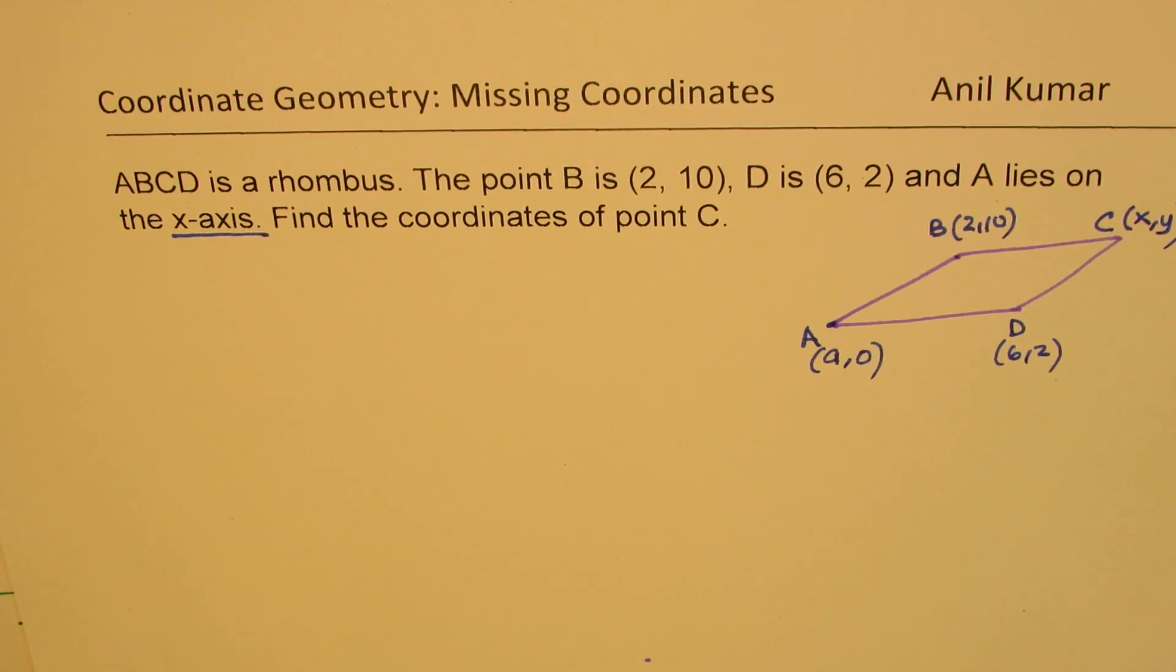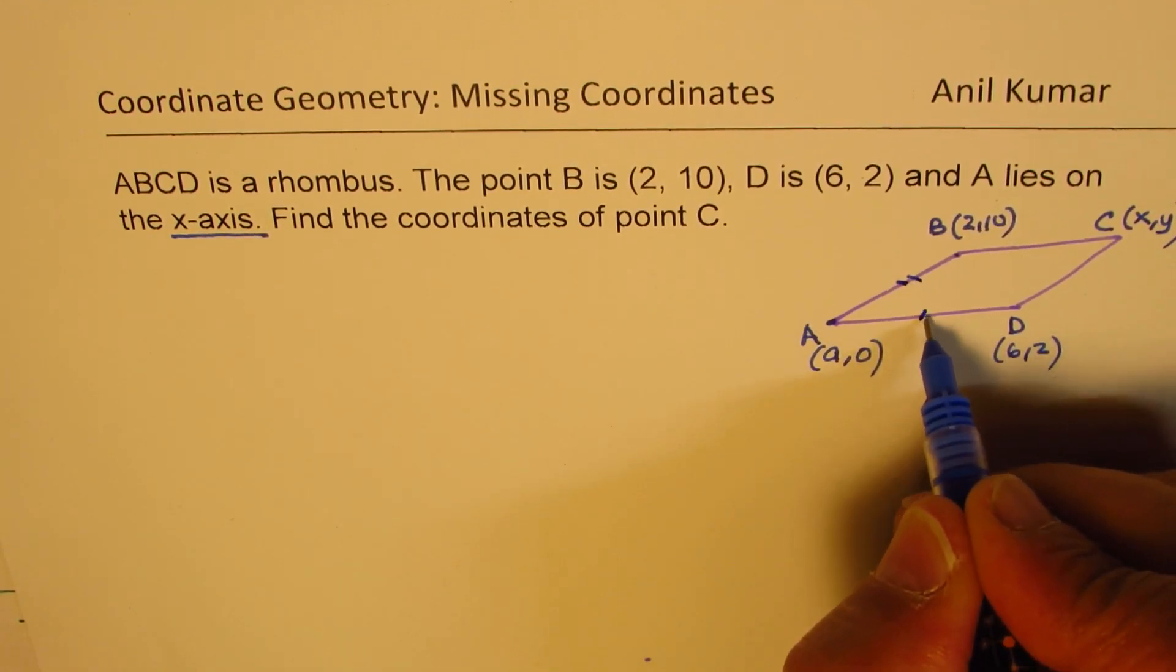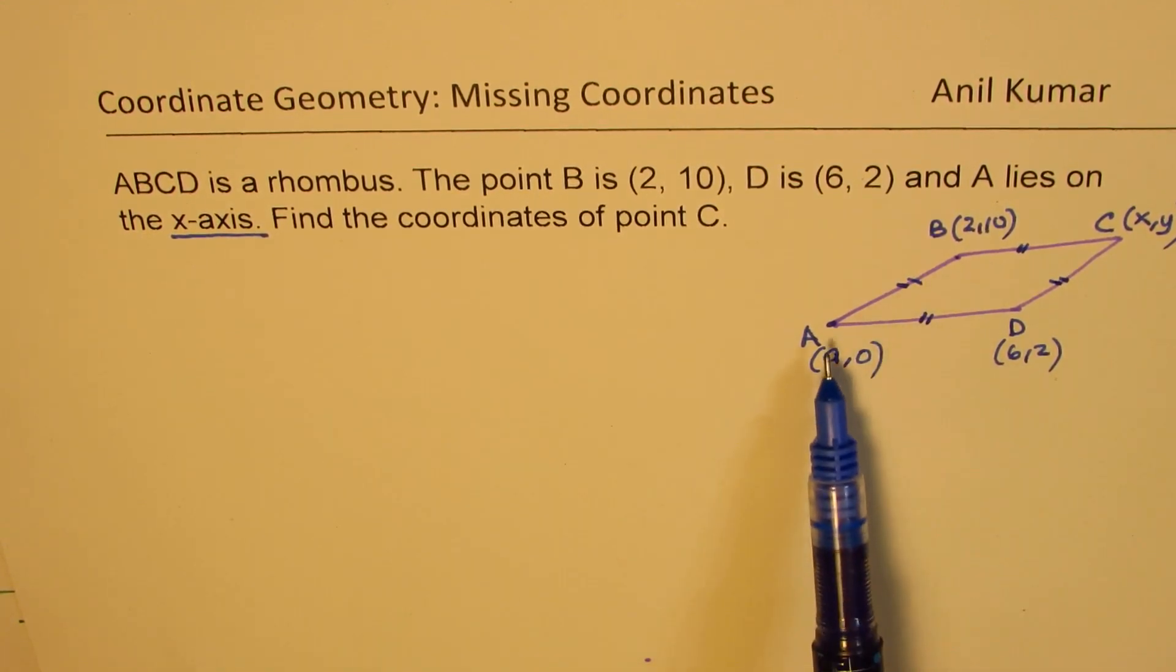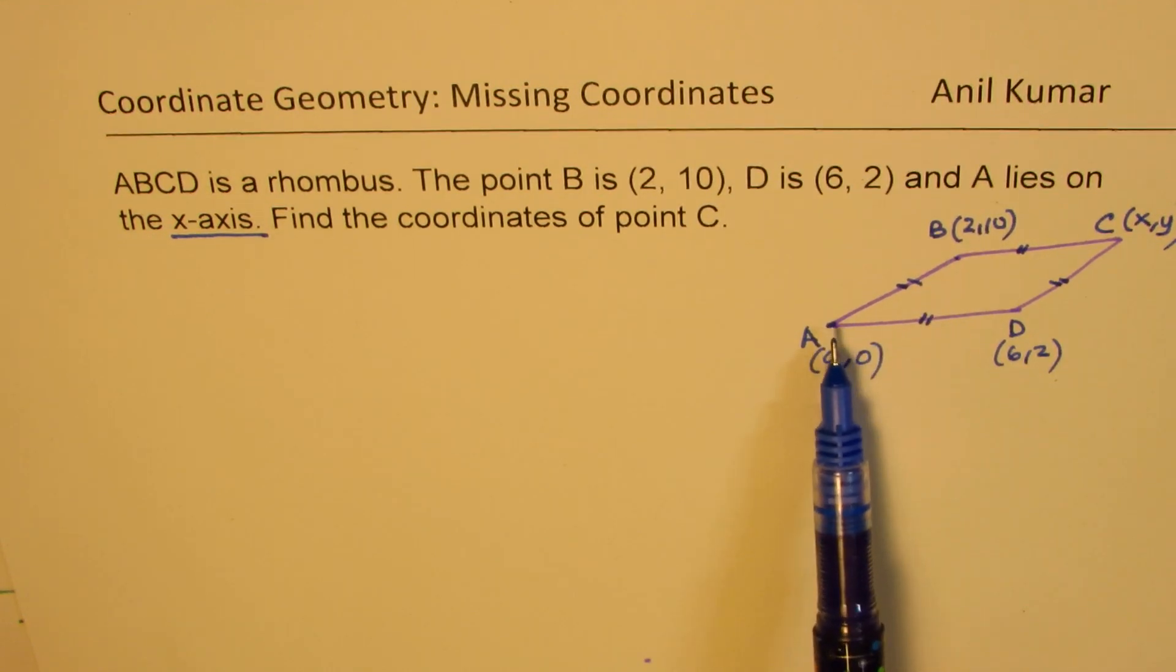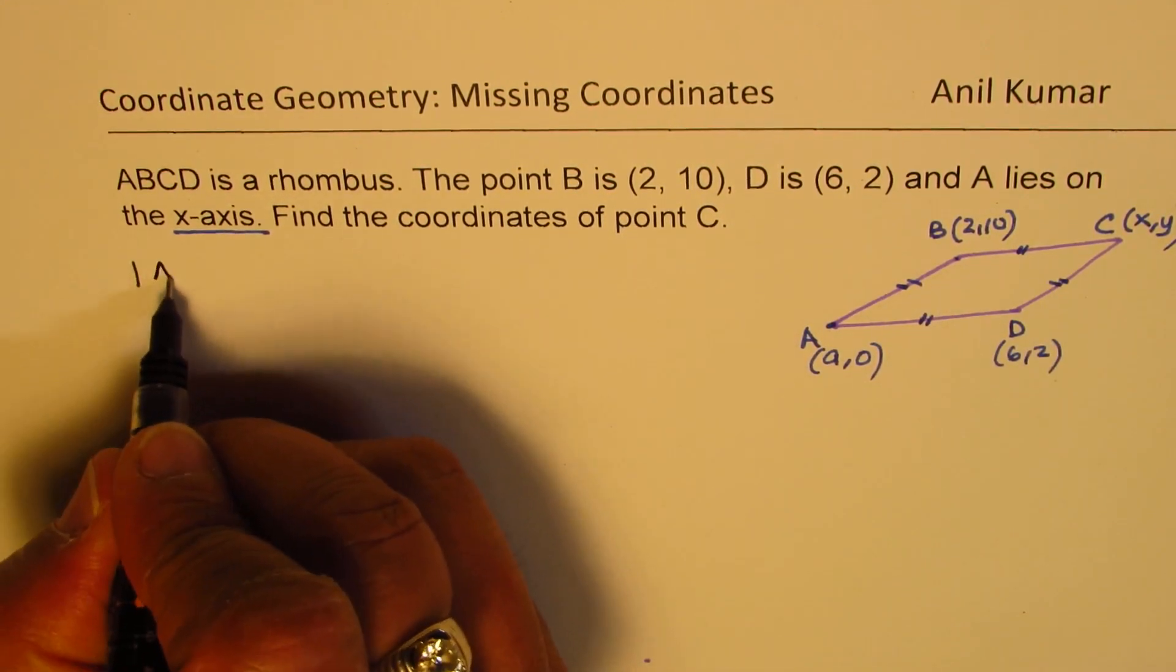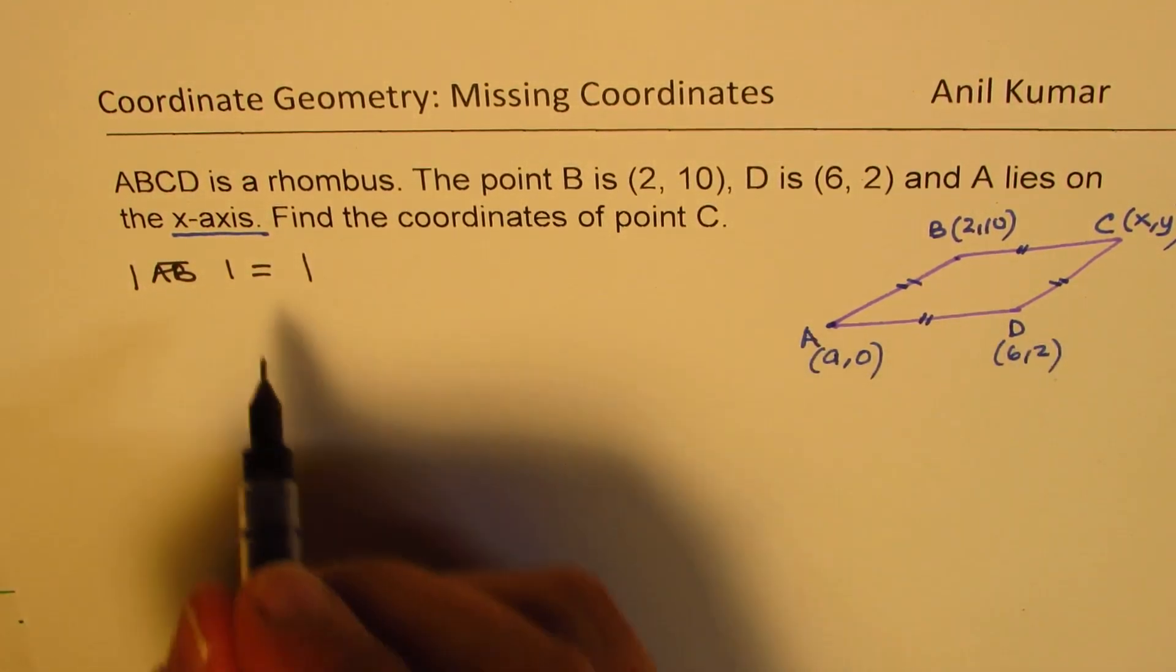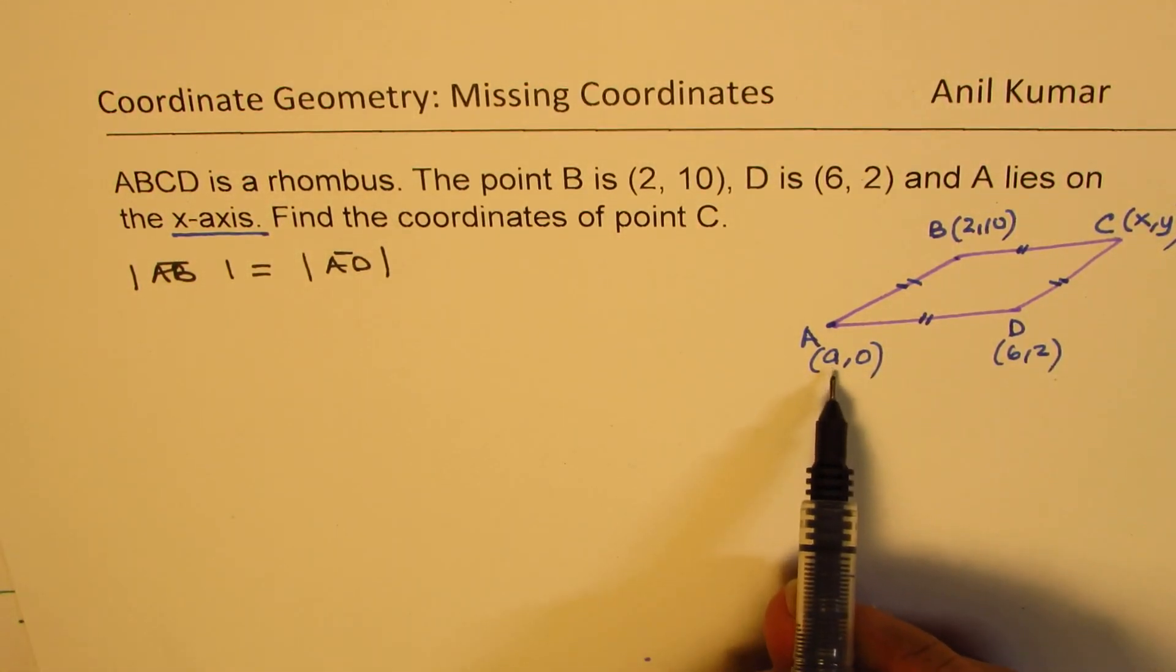Now the idea is to find coordinates of point C. When we're saying it's a rhombus, that means all the sides are equal. To find the coordinates of A, we can use the concept that AB is equal to AD, the length. So we know that the length of A to B is equal to the length from A to D.